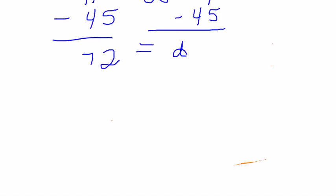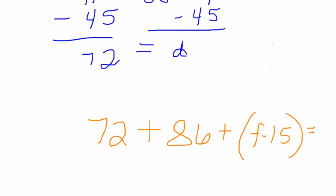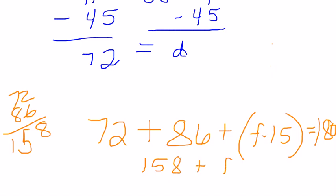So 72 plus 86 plus F minus 15 has to equal 180 degrees, because that's the sum of interior angles in a triangle. Let's see, 72 and 86 is 158, plus F minus 15, which still equals 180.